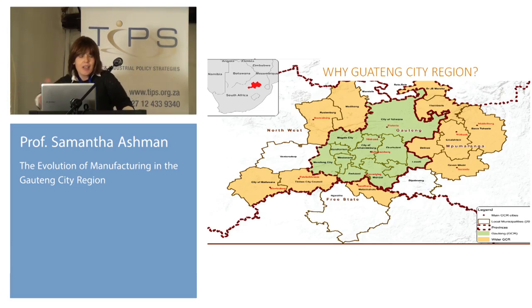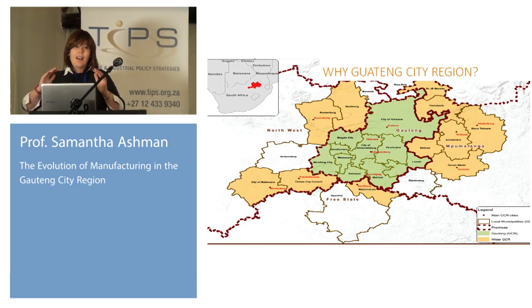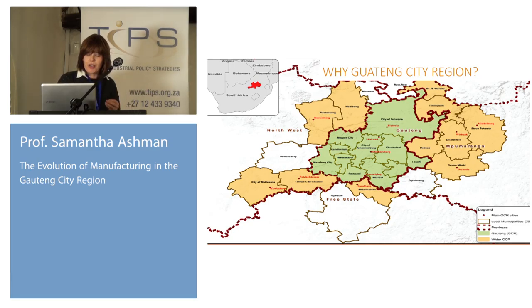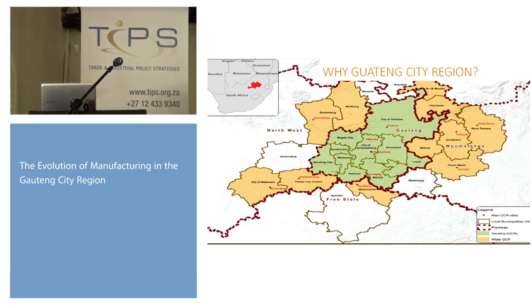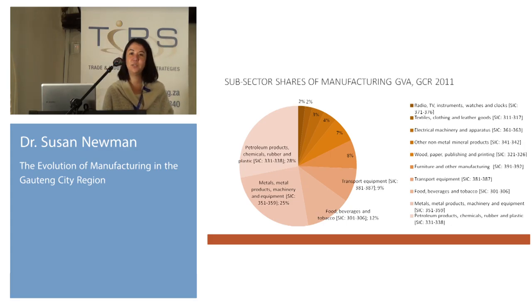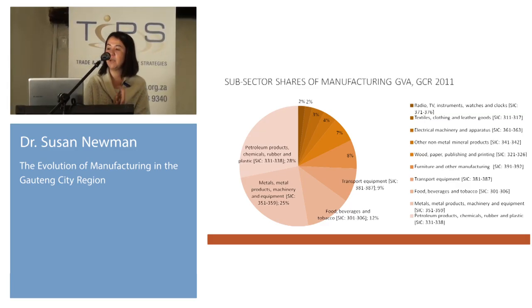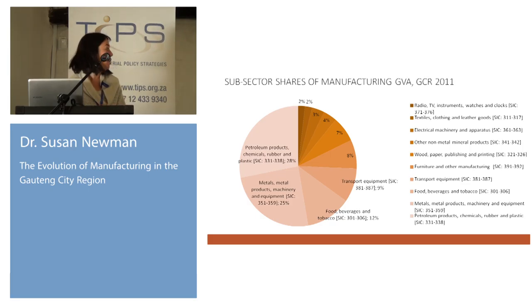If you look at GVA by province — this is for 2011 — Houteng is still the historic centre of the economy. We're doing this work for GCRO, the Houteng City Region, which is bigger than just the borders of Houteng — it spreads to the east to include the coal belt, to the south to include Sasol, and to the northwest to Rustenburg platinum mining. This area encapsulates the historic heartland of the MEC. What we've been looking at — and what Susan is going to take you through — is what the picture of how it's evolved looks like.